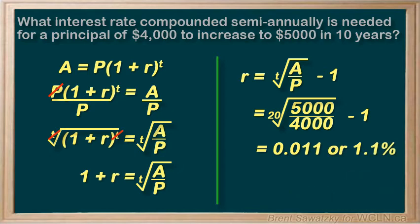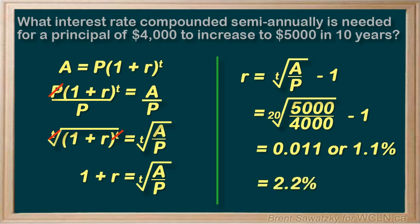Now we have to double check ourselves. We see that we're compounding semi-annually, so this 1.1% is per compounding period — or per half a year. Normally we're asked to report the interest rate in percent per year, so we'll have to double that, giving us 2.2% per year.